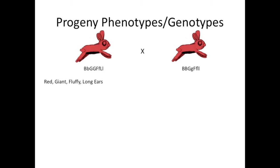This shortcut is especially useful if you have to consider more than two traits. For instance, let's say these bunnies can also be fluffy or not fluffy, and have long ears or short ears, with fluffy and long ears being dominant. If I cross these two bunnies, what fraction of their offspring would be red, giant, fluffy, and have long ears? Just determine the fractions for each individual trait and multiply them together. All bunnies will be red and giant, 3/4 will be fluffy, and half will have long ears — giving us 3/8 of the offspring being red, giant, fluffy, and long-eared.